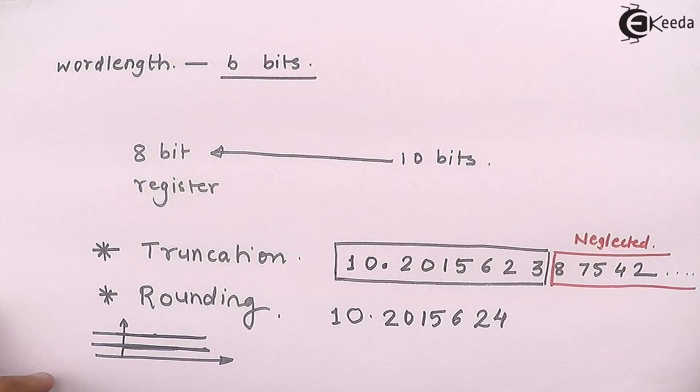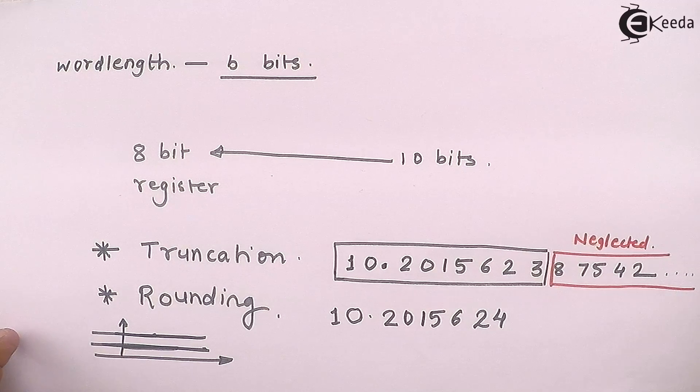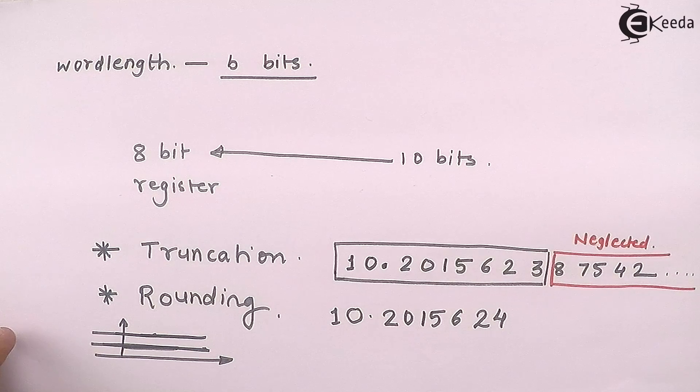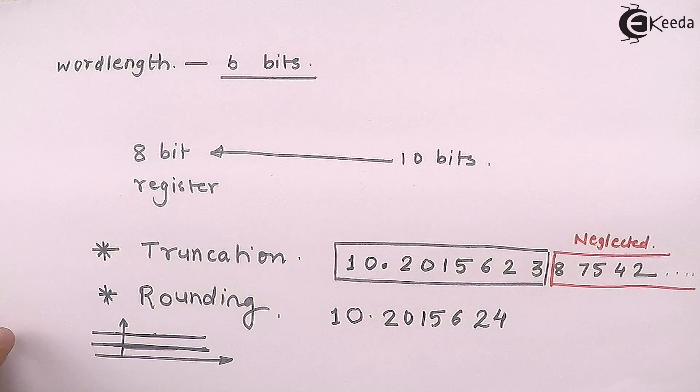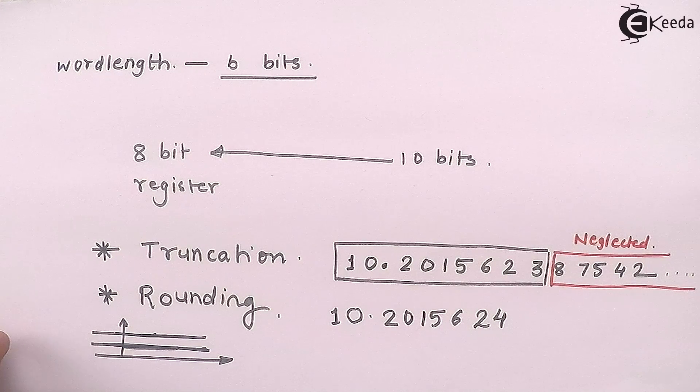So why we need truncation and rounding? Only because the register length in the processors are fixed, they are either 8 bit, 16 bit, or 32 bit, max to max we can go up to 64 bits by combining the registers but not beyond that.